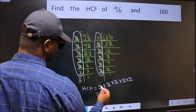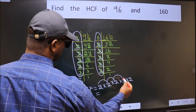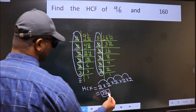So our HCF is 2 into 2, 4 into 2, 8 into 2, 16 into 2, 32 is our HCF.